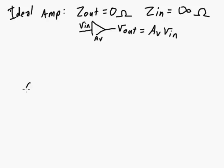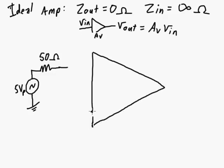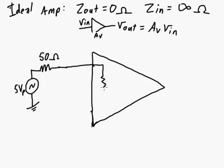So let's look at an overall system. So we've got a 5 volt peak source here that has an output impedance of 50 ohms. And this is connected to our amplifier that has an input impedance of 1500 ohms.